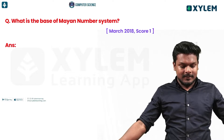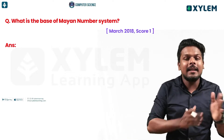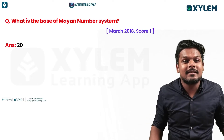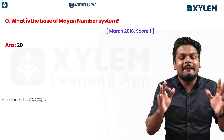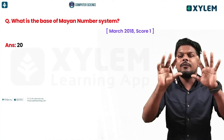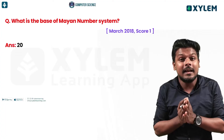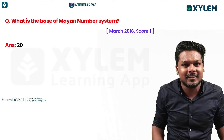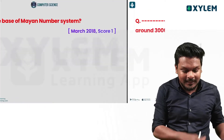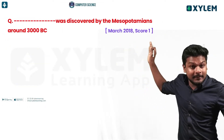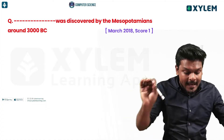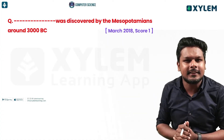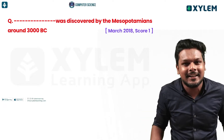What is the base of the Mayan number system? The base of the Mayan number system is the Babylonian number system.